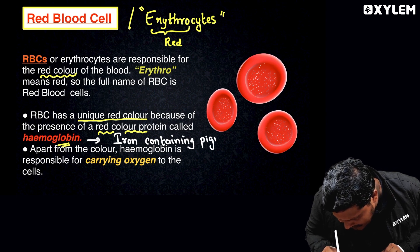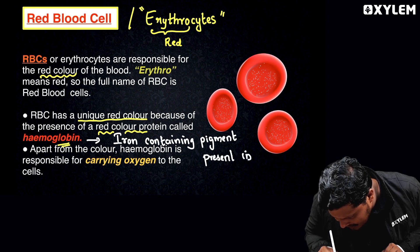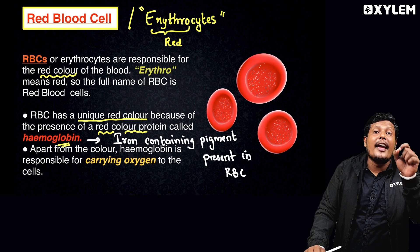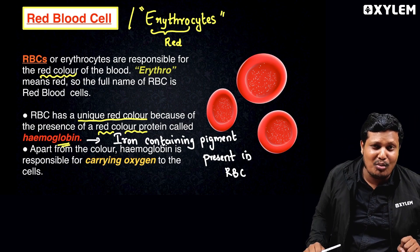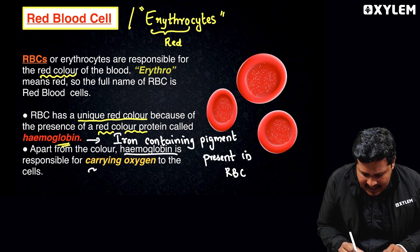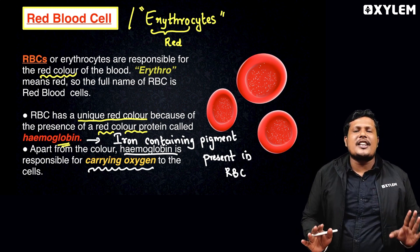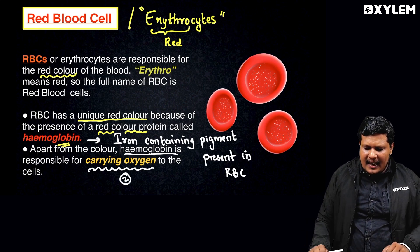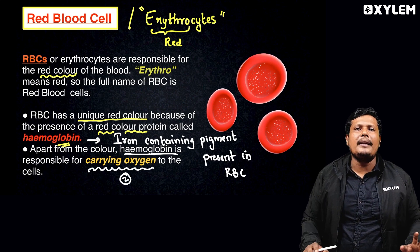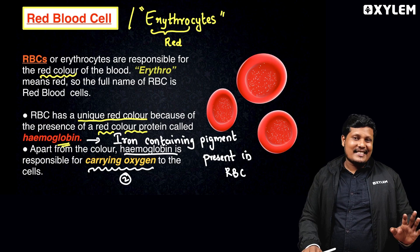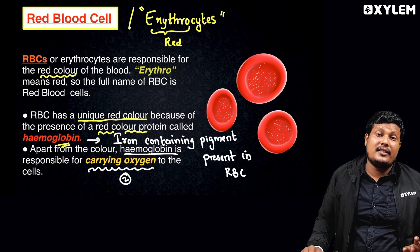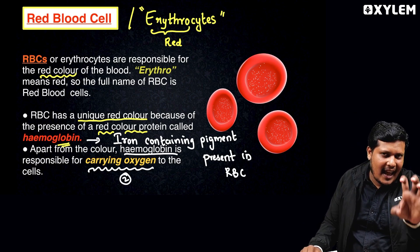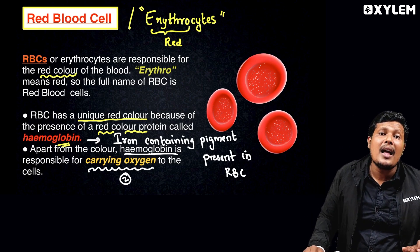RBC contains an iron-containing pigment called Hemoglobin, which is responsible for giving red color to the blood. Apart from this, hemoglobin is responsible for carrying oxygen to the cells. So hemoglobin has two functions: first, it gives red color to the blood because it is an iron-containing pigment; second, it carries oxygen to the cells.